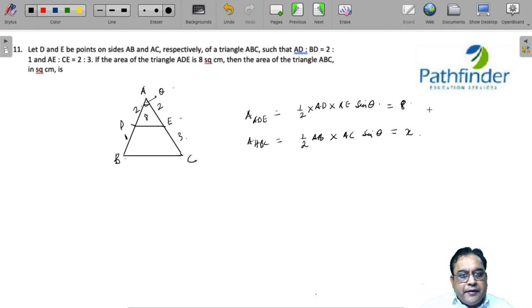Now if I divide equation 1 by equation 2 - this is equation 1, this is equation 2 - what am I going to get? You can actually do this orally. 1/2 × AD, I can write as 2k because the ratio is 2. AE also I can write as 2p.